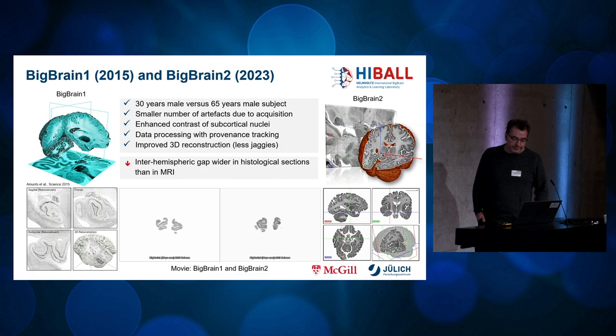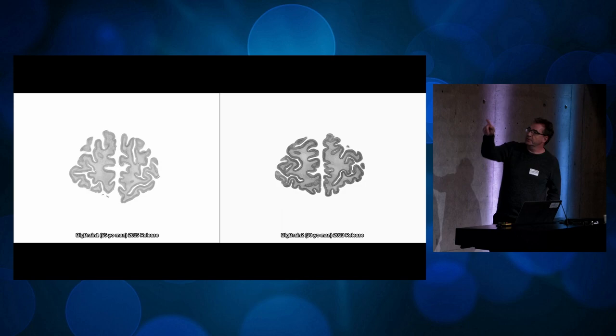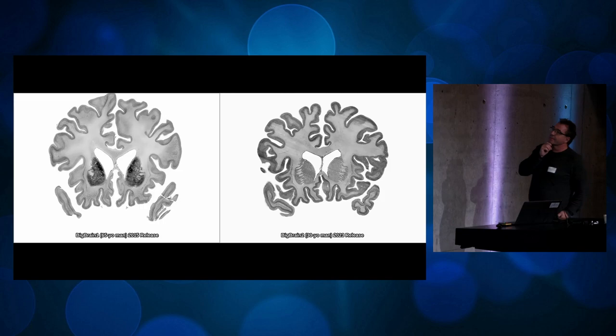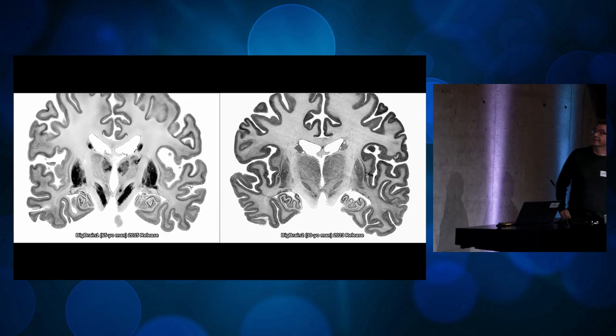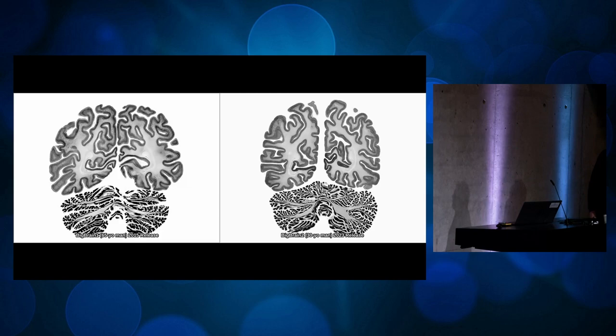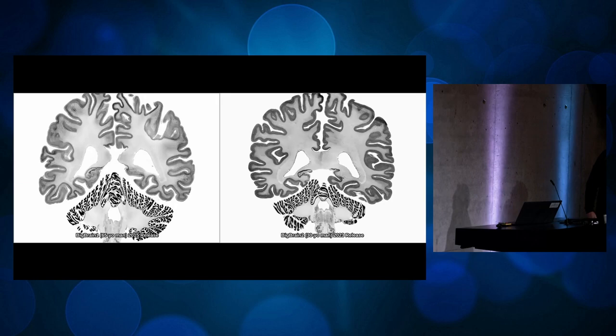Finally, I want to compare the BigBrain 1 dataset with the BigBrain 2 dataset. The smaller number of artifacts and the better contrast of the subcortical areas lead to an overall improved result of the 3D reconstruction. In this video, on the left side is BigBrain 1 and on the right side BigBrain 2. Please direct your attention to the subcortical regions — the contrast in BigBrain 2 is now much better than in BigBrain 1. The boundary of layer 1 is also much smoother, and almost all artifacts that are still present in BigBrain 1 are improved and corrected in BigBrain 2.